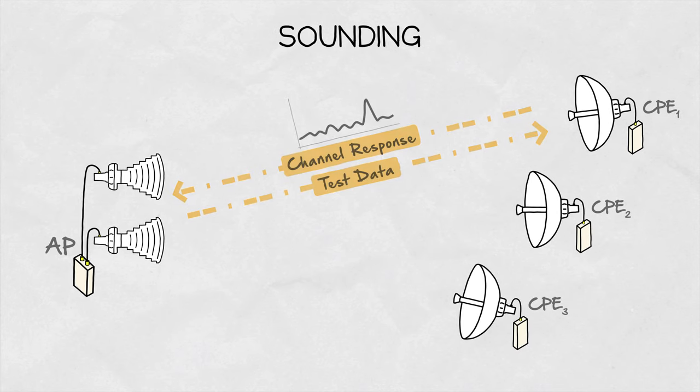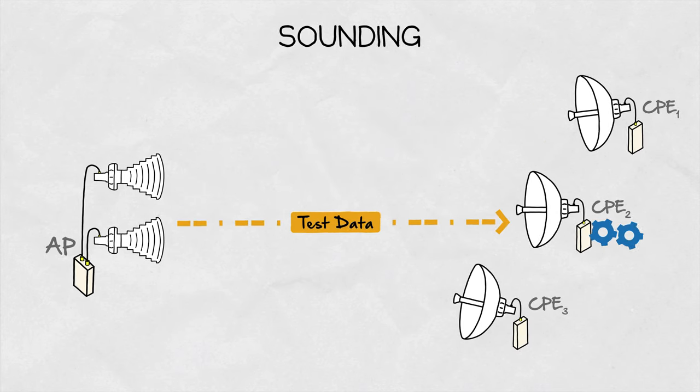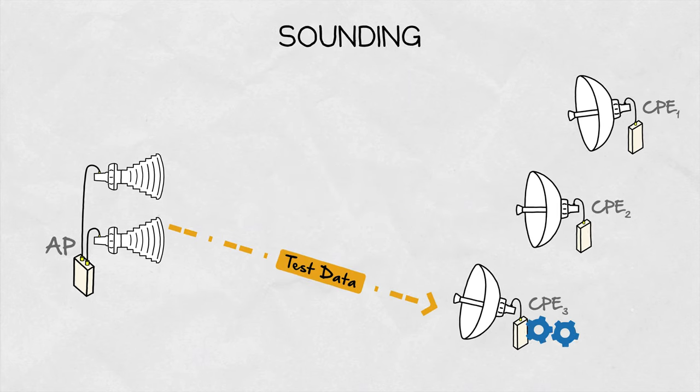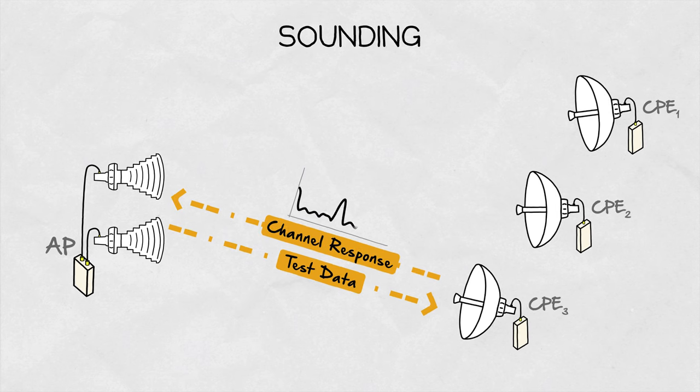Based on the predetermined knowledge of the test data, the client stations can calculate the channel response and send it back to the access point, which then uses it during the download for correct operation.